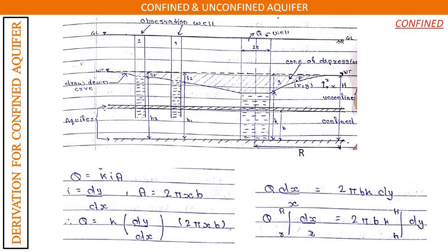For the confined aquifer, similarly q = k × i × a. In a confined aquifer there are two aquifer layers, and the height between them is considered as b. So the variable y is replaced by b, the constant thickness between the two confining layers.